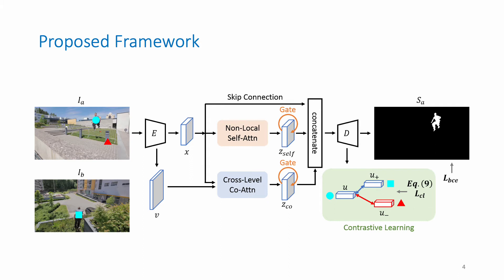Finally, the original feature X, self-attended feature, and co-attended feature are concatenated and fed into the detection head to generate the output saliency map. To learn better visual representations, we apply contrastive learning on the features before the final output layer.